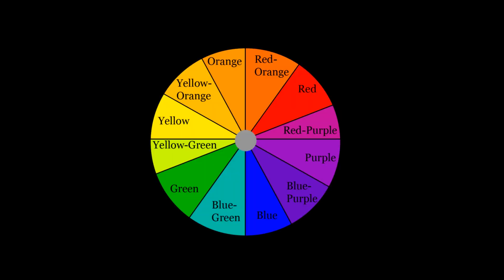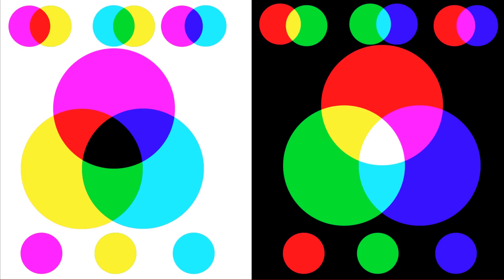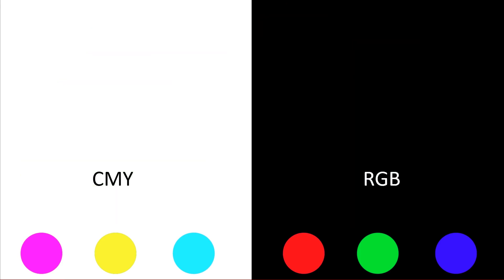Okay, so in the first video we went over the color wheel, which looks something like this. Unfortunately that's only half the story. The other part looks like this, which might seem intimidating or confusing at first, so let's break it down a little bit.